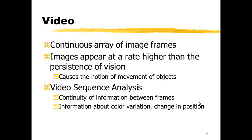A video can be represented as an array of image frames. Even though images are still, the concept of motion of objects in these images arises due to the persistence of vision. Video sequencing analysis is used to identify the information that represents the motion of objects between frames of a video. This information is related to color variation, change in position, or change in illumination and intensity of the frames in the video.